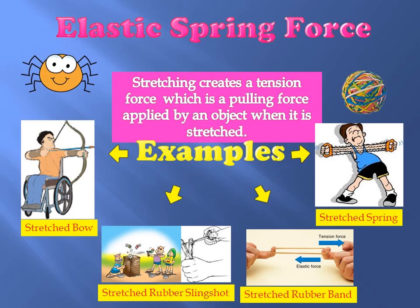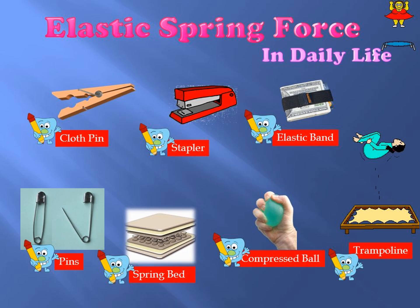These are examples of elastic force. Stretching creates tension force, which is a pulling force applied by an object when it is stretched — like a stretch bow, stretch rubber slingshot, stretch rubber band, and a stretch spring. This is what you call elastic deformation — they will go back to their original shape. We also have elastic spring force examples: clothes pins, stapler, elastic band, trampoline, compressed ball, and spring bed pins. These are examples of how an object changes shape when force is applied.